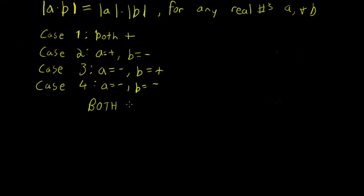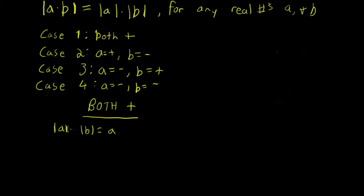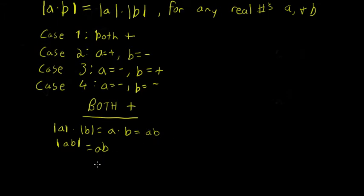Looking at case one, both A and B are positive. On the right side, the absolute value of A times the absolute value of B — well, the absolute value of a positive number is just that number itself, so this is just A times B. On the left side, the absolute value of AB — since A and B are positive, their product is positive, and the absolute value of a positive number is just that positive number. So both sides are equal when both A and B are positive.